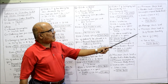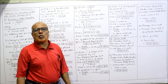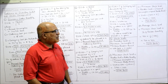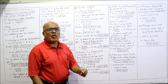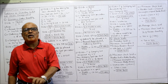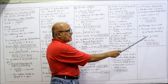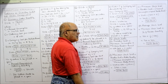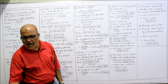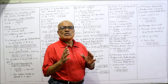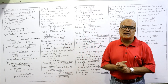Average stock level formula: minimum stock level + half of reorder quantity. Minimum stock level = 900 units. Reorder quantity = 1500, so half of 1500 = 750. Therefore: 900 + 750 = 1650 units is the average stock level.